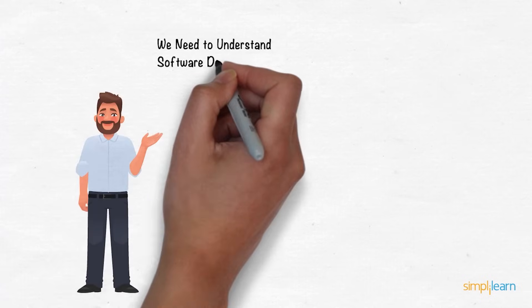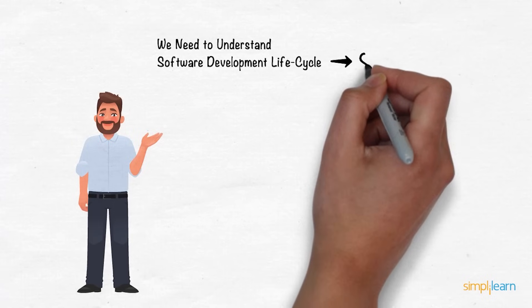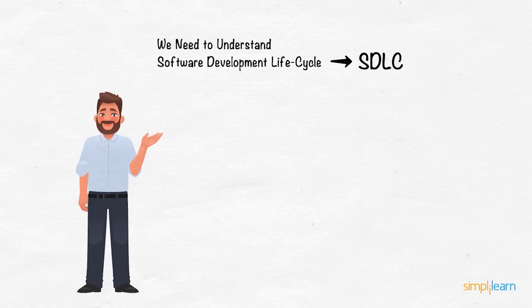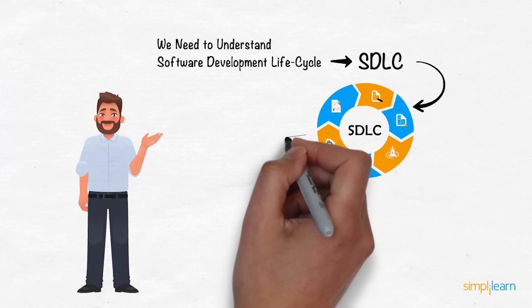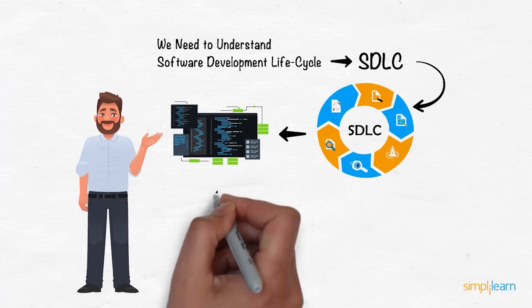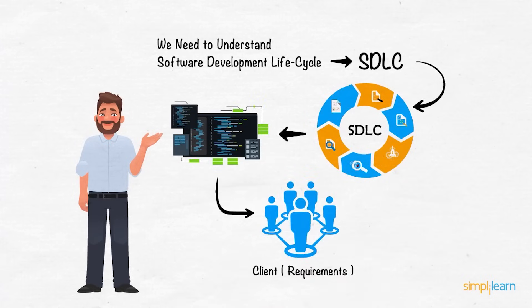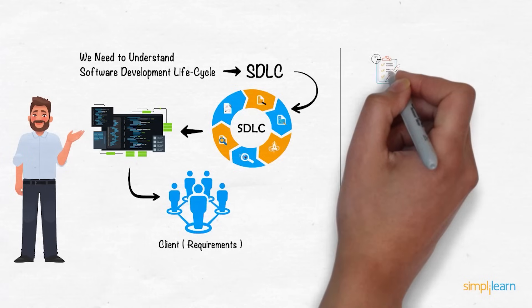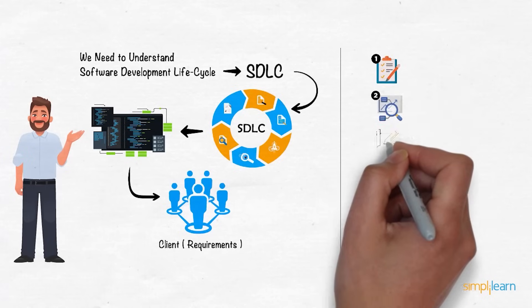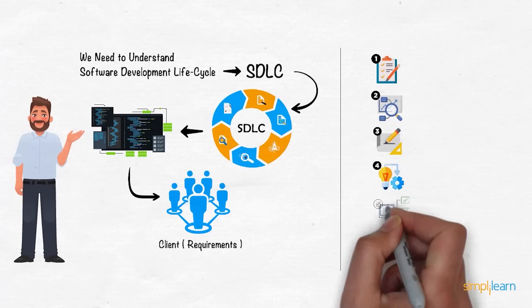We need to understand the working of the software development lifecycle, also known as the SDLC. It involves distinctive phases to initiate the software production based on the client requirements. Further, Mark briefs Adam about the six crucial phases of SDLC in designing any software application.